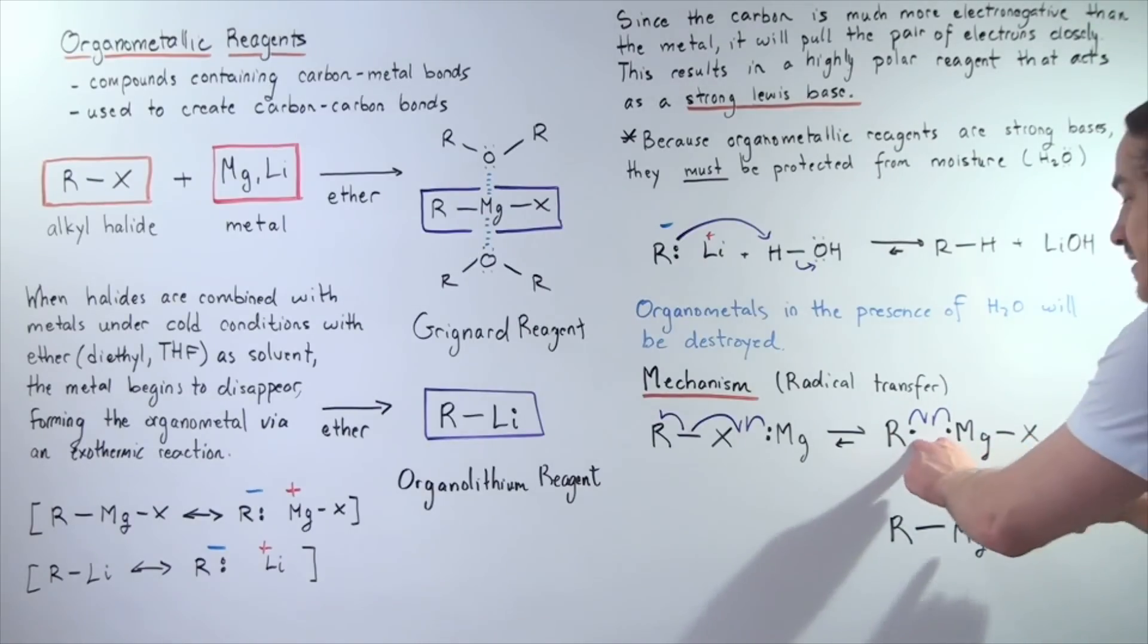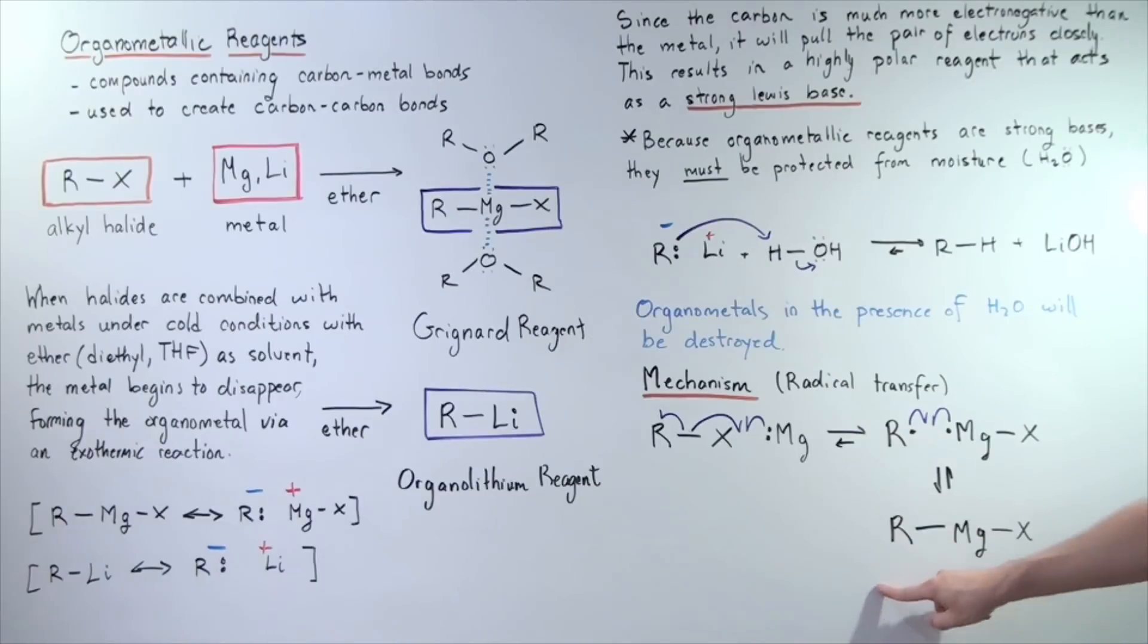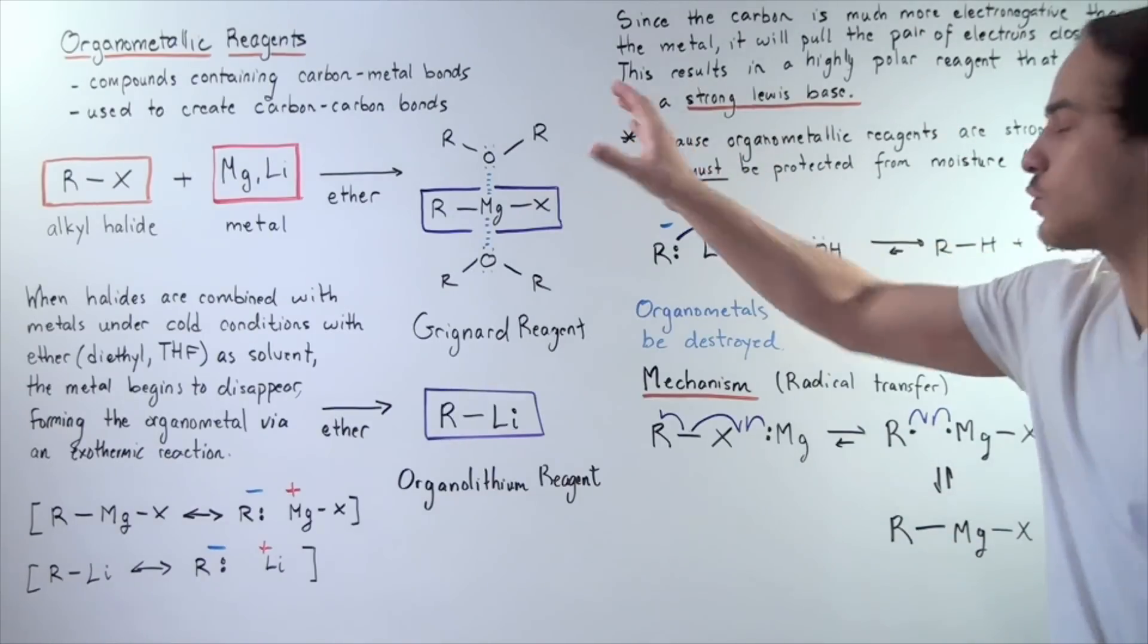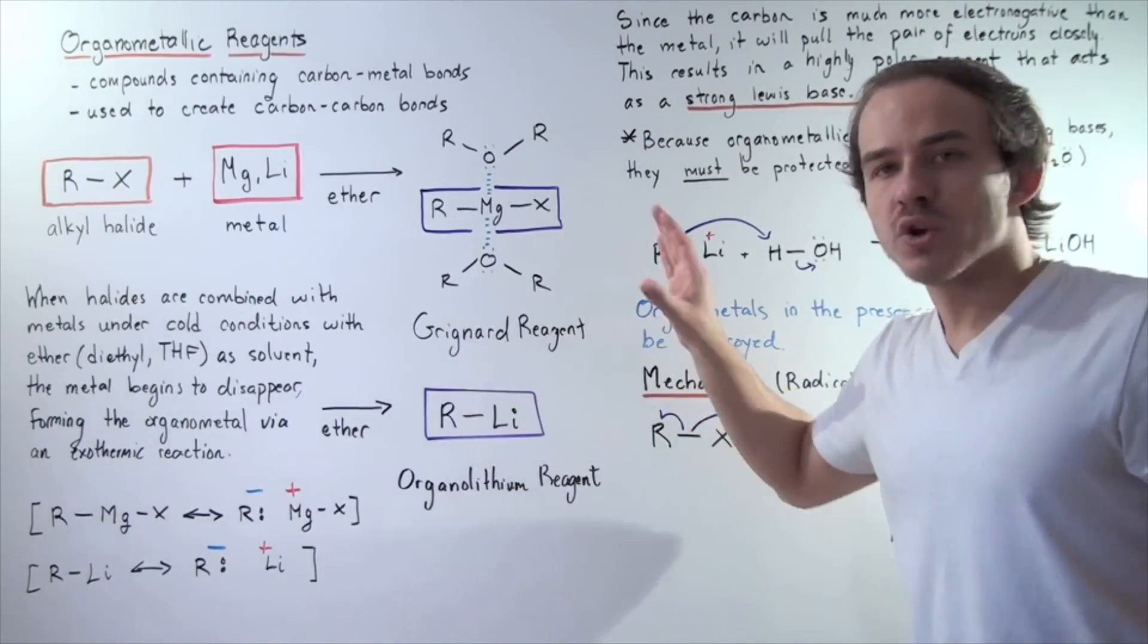It has one electron. And now, this electron combines with this electron to form our final product, the organometallic reagent, in this case, the Grignard reagent.